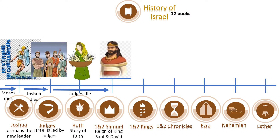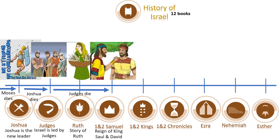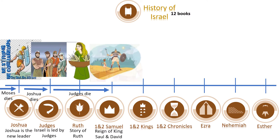The people of Israel ask God for a king, and God appoints King Saul as the first king through Samuel. The books of 1 and 2 Samuel talk about the reign of King Saul and King David. They also include the wonderful story of friendship between Jonathan and David, and the famous story of David killing the giant Goliath.